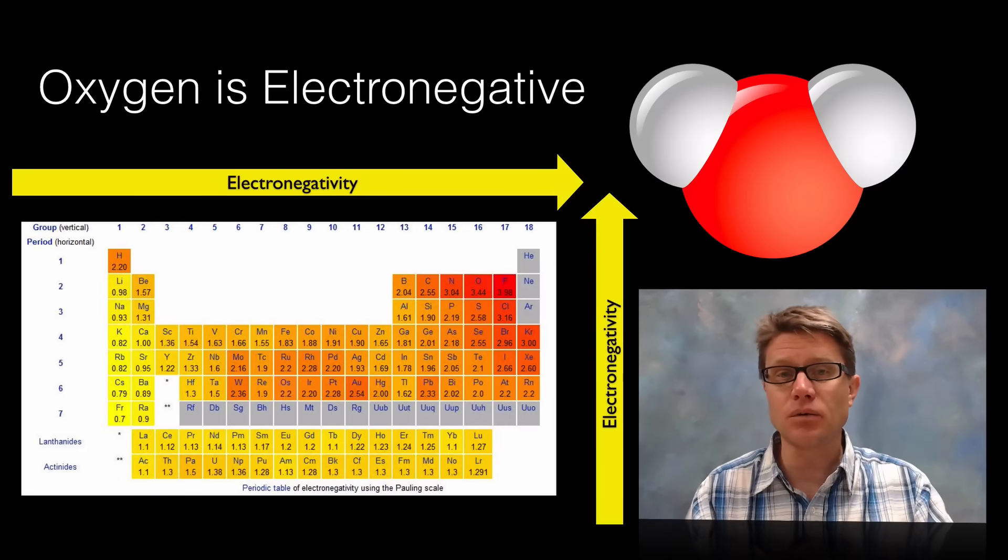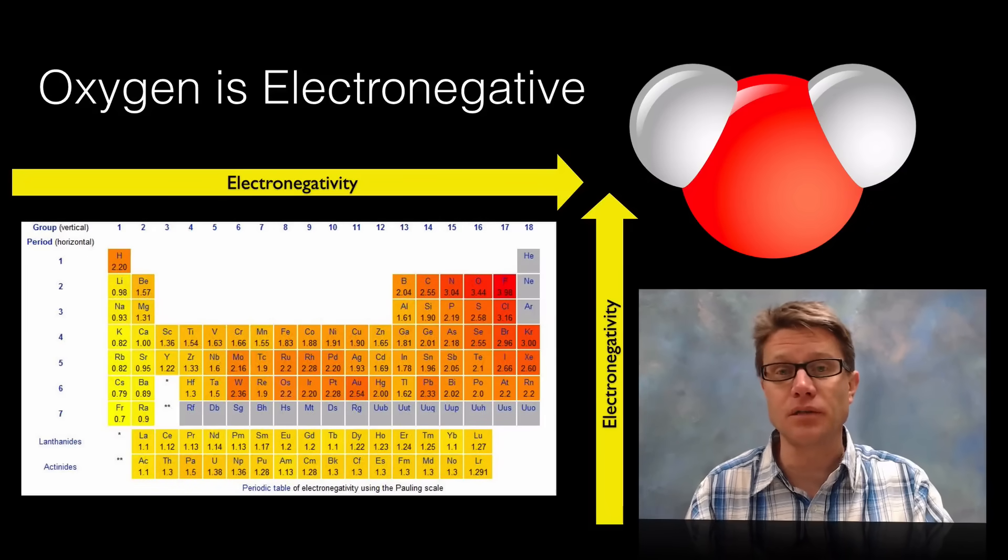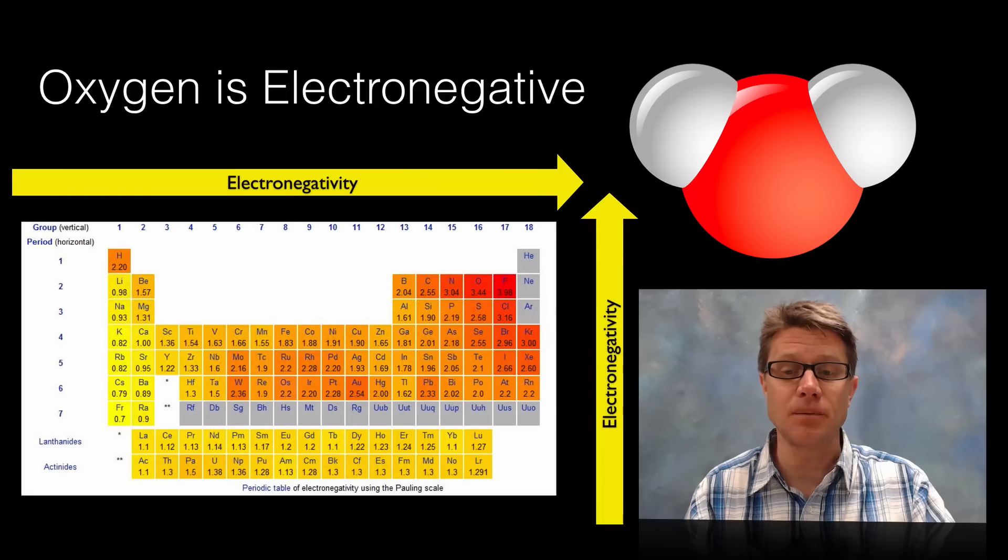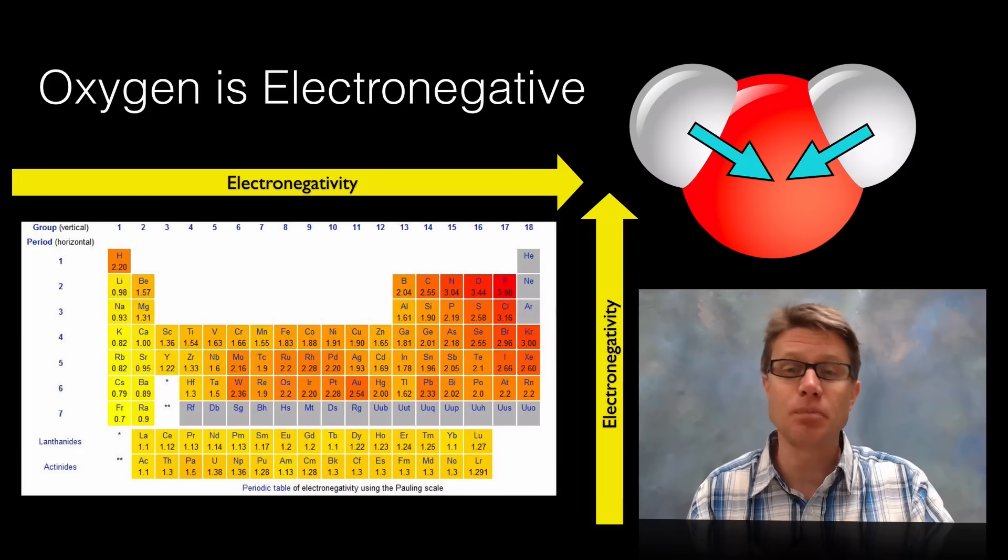You might think, well then as we go down on the periodic table why doesn't it increase there? Well as we go down we're filling in more levels of electrons. And so these electron levels that are filled are shielding that pull of the protons on the inside. Therefore we have to go up on a periodic table to get electronegativity increases. And so oxygen is really high.